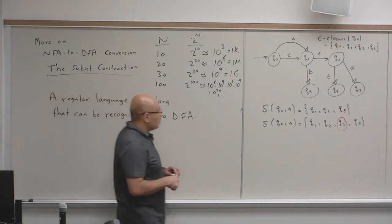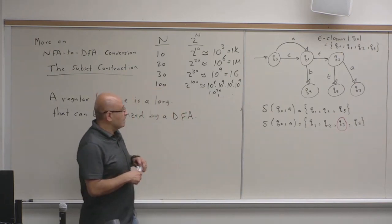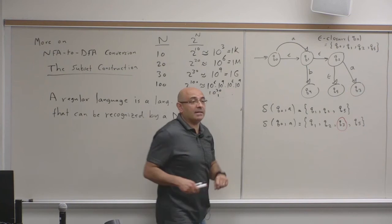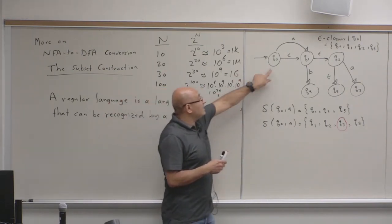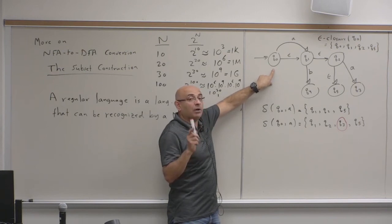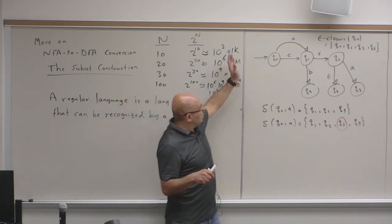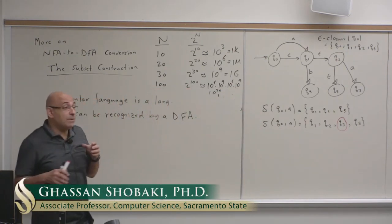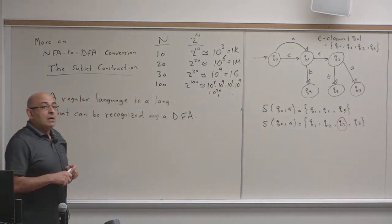That's a very good answer. In the subset construction, we would also be in Q2 at that time, so we could take the A transition to Q3. It may seem like we're missing Q3 if we use the first delta definition, but we're not actually missing it. Q0 will never be in a state by itself; the states in the epsilon closure of Q0 will always be grouped with Q0, and any DFA state containing Q0 alone will always be eliminated because it will never be reachable.